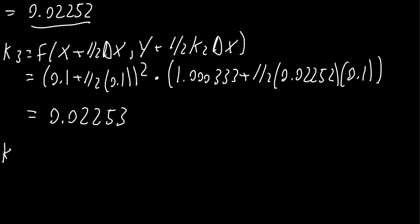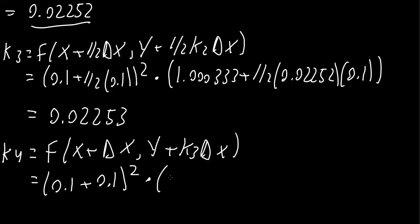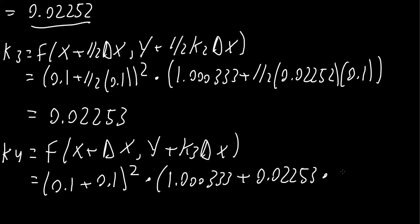Now we do k4. k4 = f(x + Δx, y + k3·Δx). With x = 0.1 and Δx = 0.1, this equals (0.1 + 0.1)² times (1.000333 + 0.02253×0.1). Using a calculator, we get k4 = 0.0401.